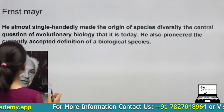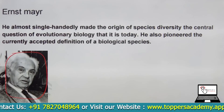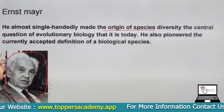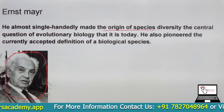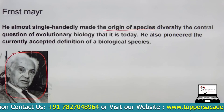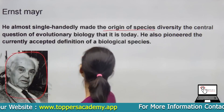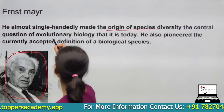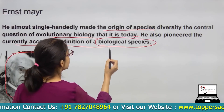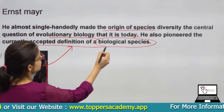Here is the scientist Ernest Mayr. He almost single-handedly addressed the central question of evolutionary biology. He pioneered the currently accepted definition of biological species — the main point here is that he pioneered the term biological species.